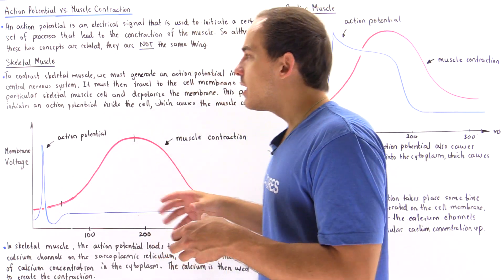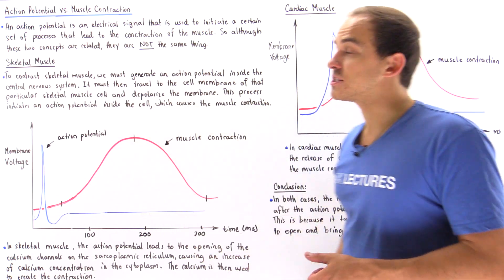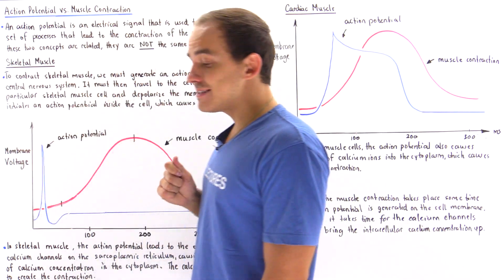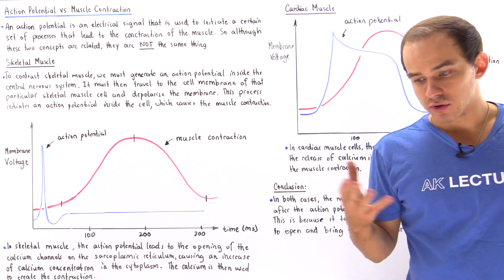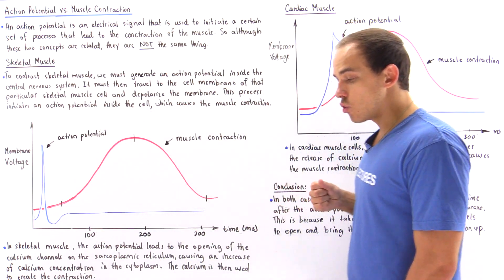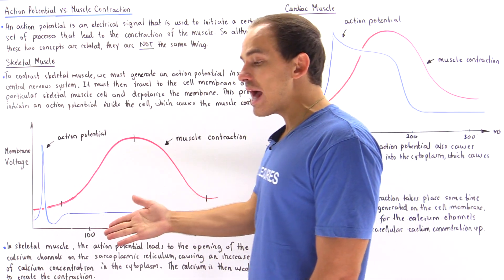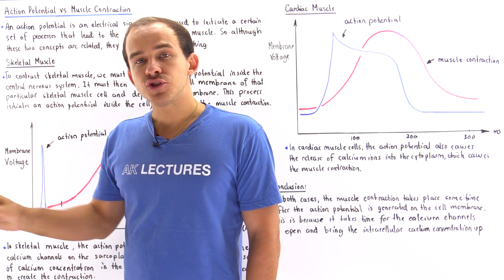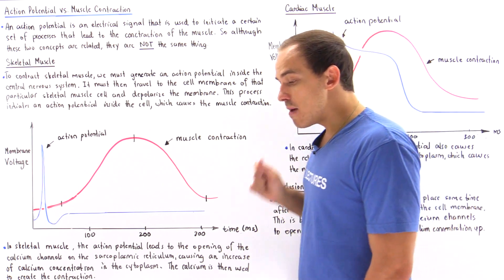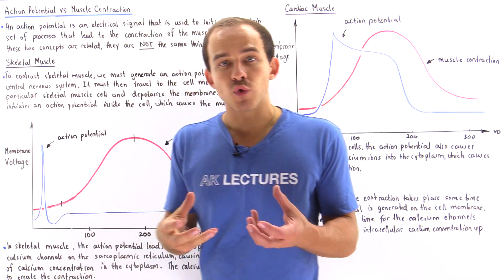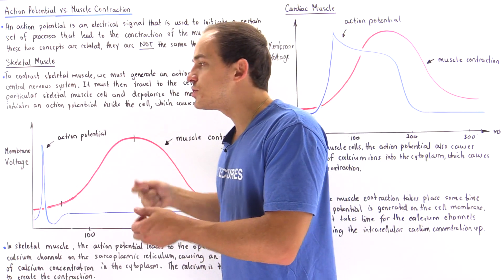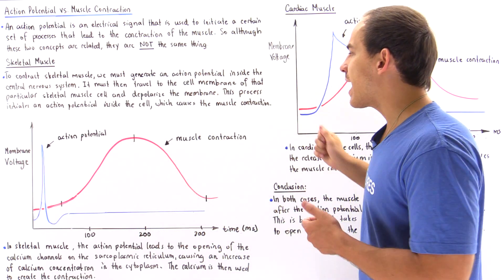Let's begin by discussing the action potential and the muscle contraction of skeletal muscles and then take a look at cardiac muscles. To contract any skeletal muscle, our action potential — our electrical signal — must be generated in the central nervous system of our body, so the brain or the spinal cord. Once we generate this action potential, it travels through the axon of the motor neuron and eventually ends up on the cell membrane of the skeletal muscle cell, where it generates its own action potential. This action potential inside the cell ultimately leads to a set of processes that cause the contraction of that muscle.